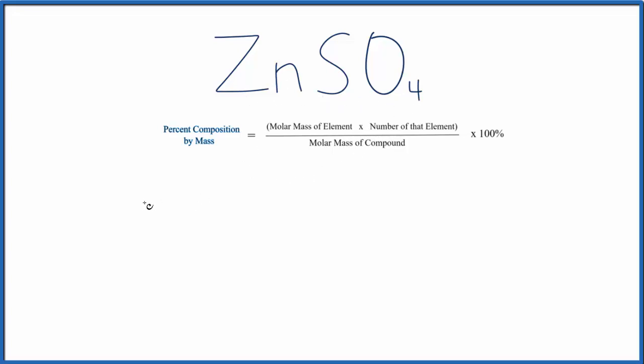So let's start out with the zinc. We'll put the zinc down here, and zinc is the part we're interested in. So we'll put its molar mass on top, that's 65.38, and that is grams per mole. I won't write that because it's going to cancel out.